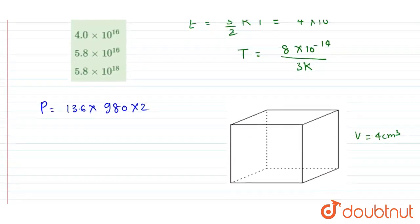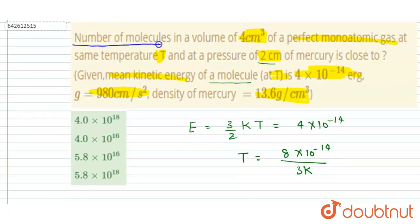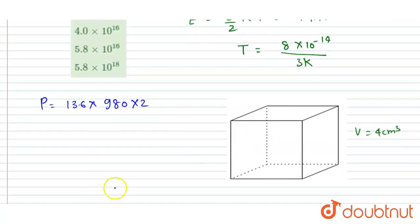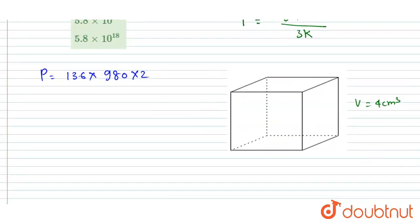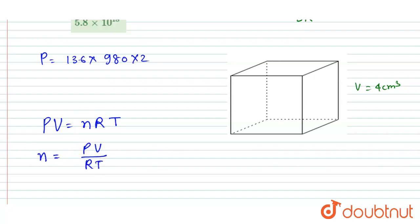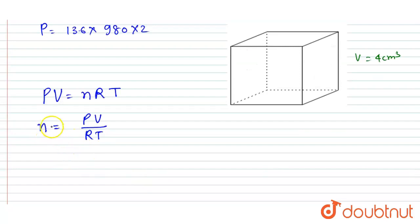We now have the pressure, volume, and temperature. To find the number of molecules, we first calculate the number of moles using the ideal gas equation PV = nRT. The number of moles n equals PV divided by RT, and then multiply by Avogadro's number Nₐ to get the number of molecules.